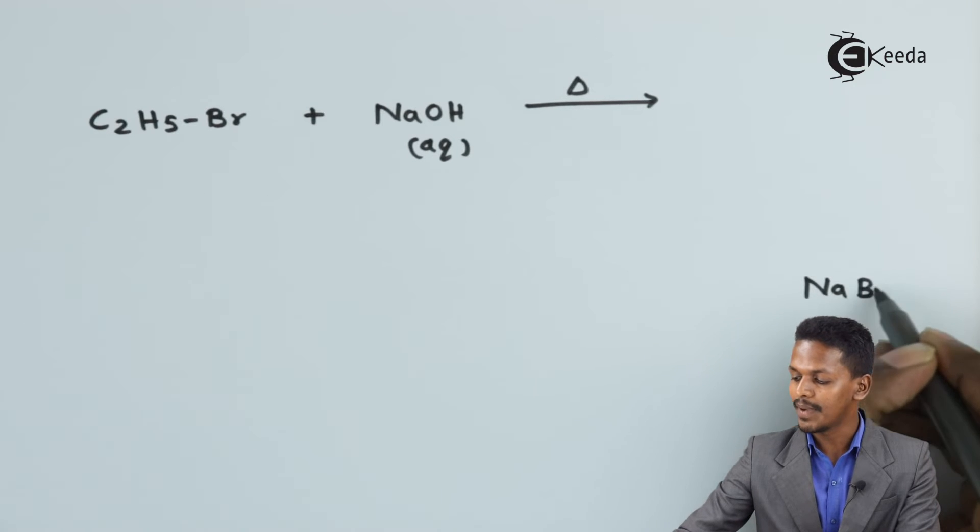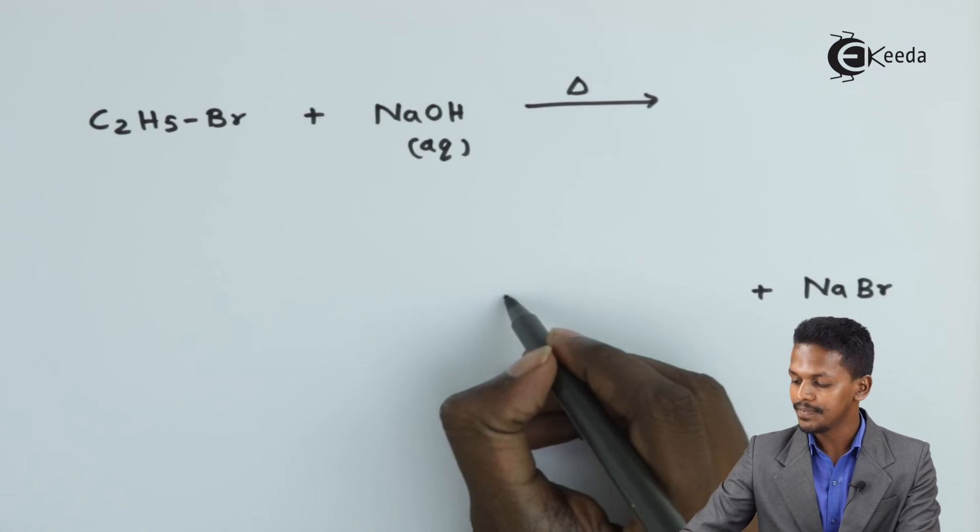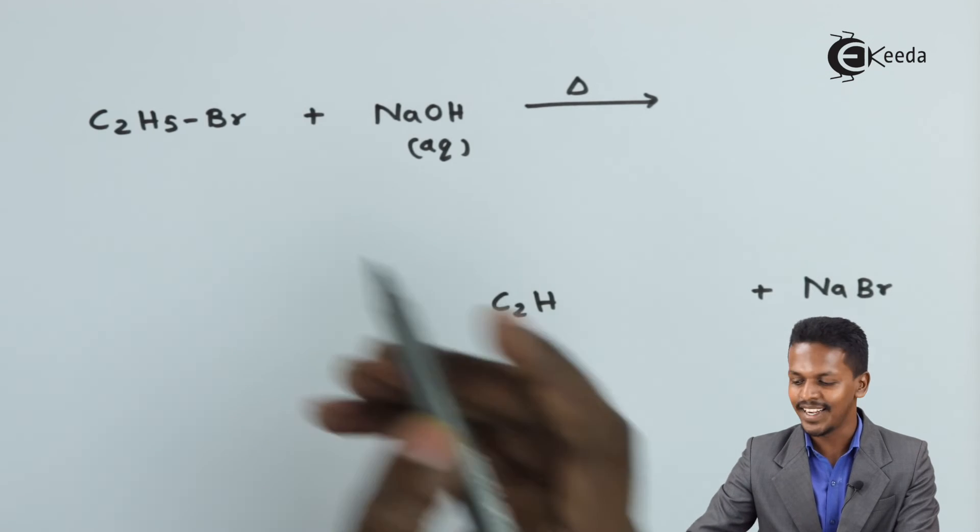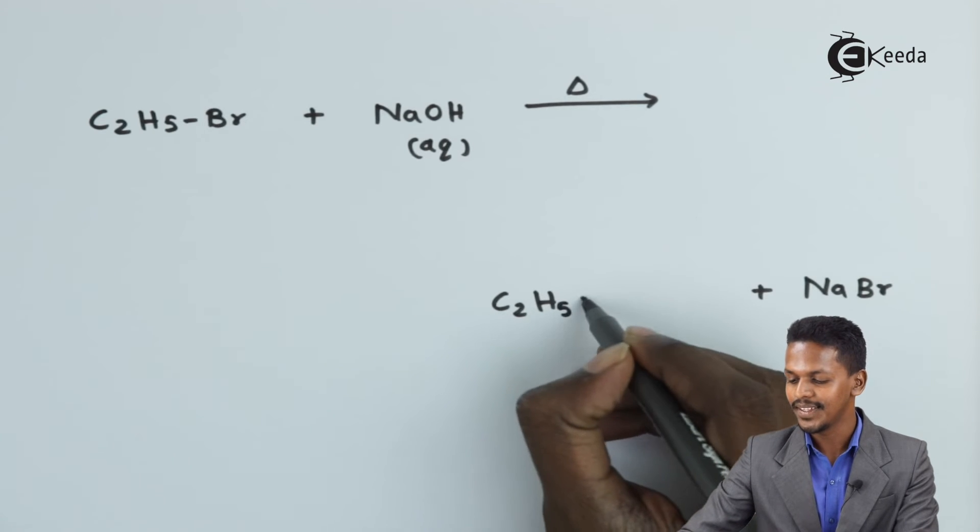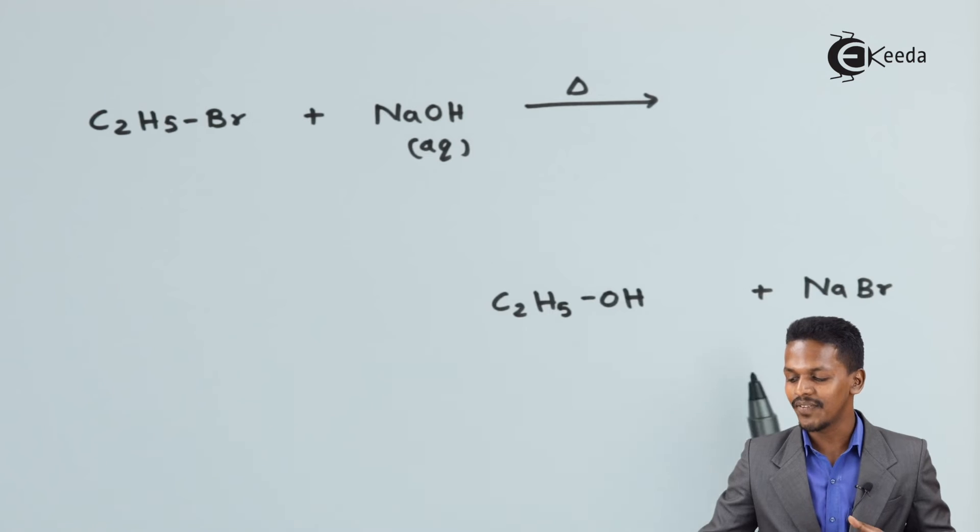And the main product that we need is C2H5OH. So that is how we can easily convert C2H5Br, an alkyl halide, into C2H5OH, that is ethyl alcohol or ethanol. This is one example where we have prepared alcohol. Now let me talk about the next example.